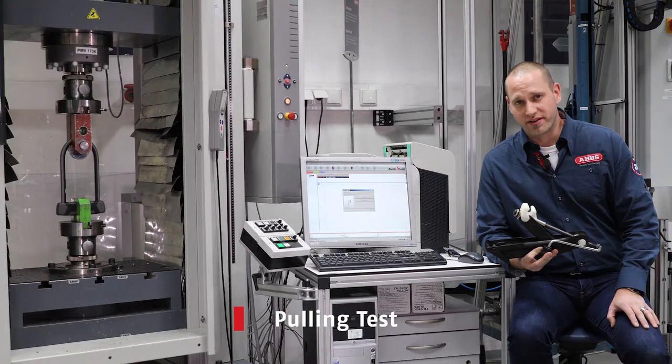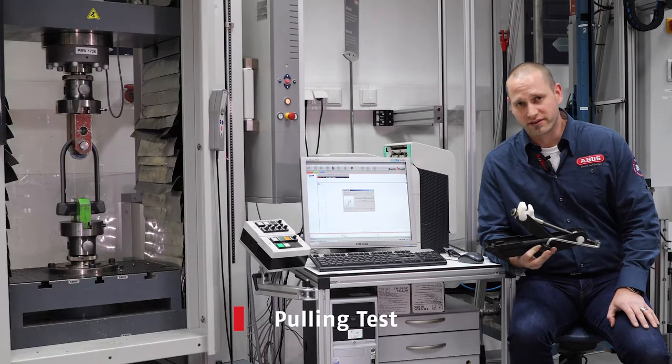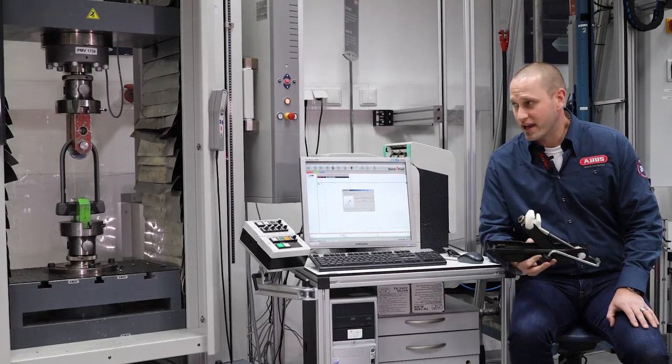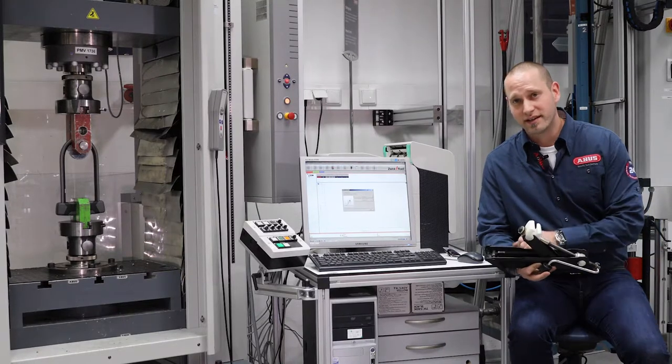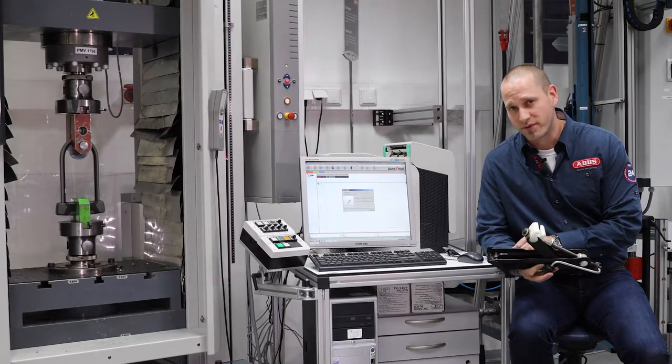Another tool that is sometimes used by thieves to defeat U-locks in particular is a car jack. This is the ABIS pulling test machine where we test for pulling forces. Let's see how the Granite X plus 540 performs.